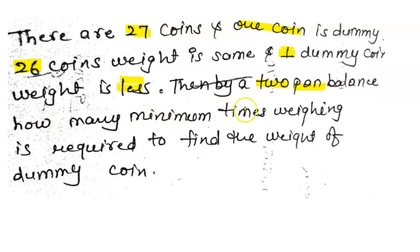How many minimum times weighing is required to find the weight of the dummy coin? We have 27 coins: 26 coins are real, 1 coin is a dummy coin with less weight. We have to find the minimum ways to find out which one is the dummy.